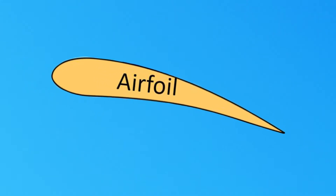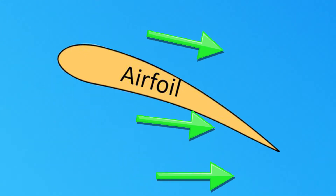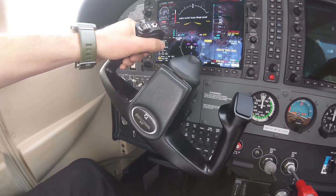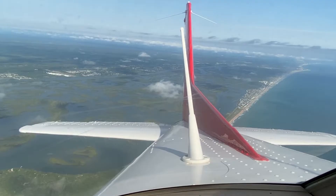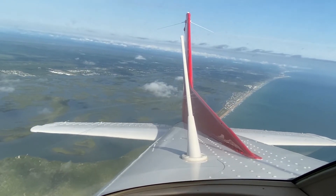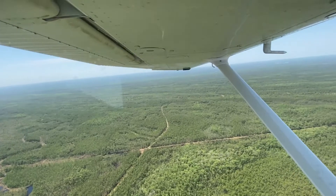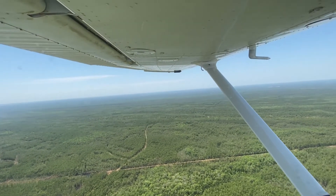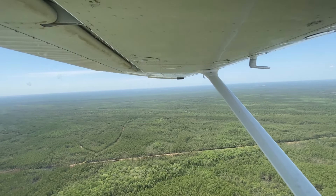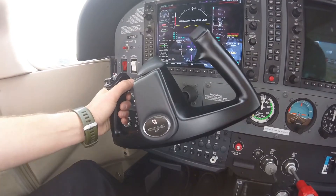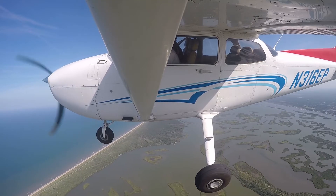As a pilot slows the aircraft down into slow flight, control effectiveness becomes less than at normal cruising speeds because less air is flowing over the aircraft's airfoils. Since less air is flowing over the airfoils, the primary flight controls — aileron, elevator, and rudder — require more input by the pilot to achieve the desired flight conditions. This reduction of airflow over the control surfaces is often described as a mushy feeling, requiring more control input before the aircraft responds.